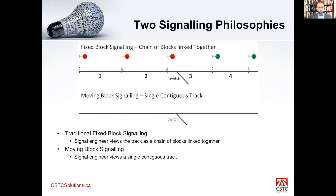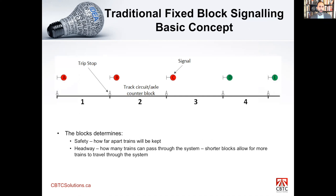Let's talk about fixed block signaling. The track is broken up into blocks — one, two, three, four — with signals A, B, C, D, E along the track. Depending on the region, in North America we have trip stops; in Europe they use inductors. There's some mechanism to stop the train if it violates a red signal. Safety is determined by how far apart trains are kept, which is basically the size of the block.